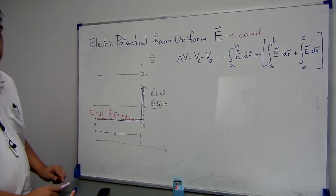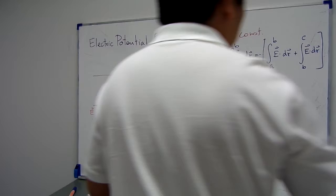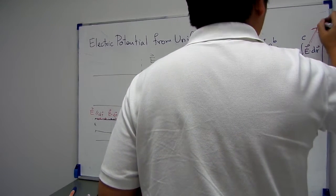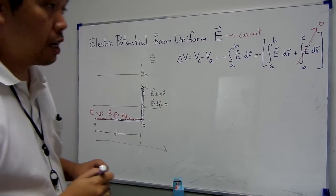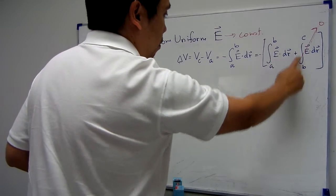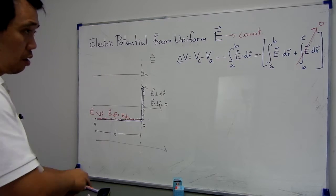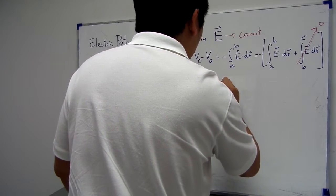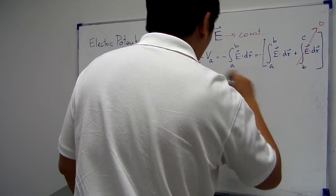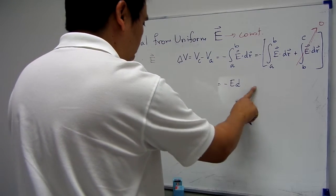So it means that E dot dr is equal to zero, because they are perpendicular to each other. When we do the dot product, it is equal to zero. So on this part, E dot dr equals zero, and summing zero gives a result equal to zero. So we only need to calculate on the first part, and we already have the solution. This gives minus E d.